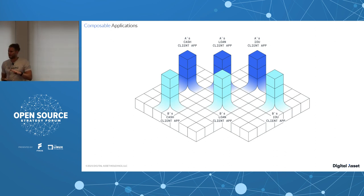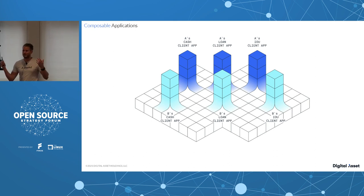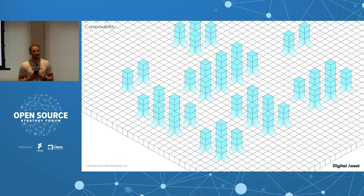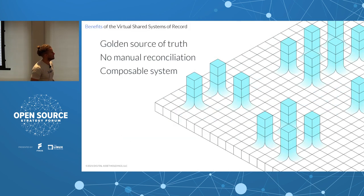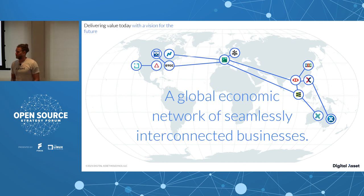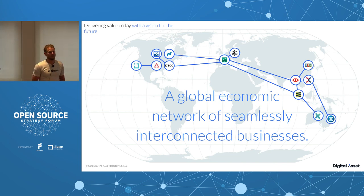Coming back to the three challenges preventing digital transformation due to data silos: first, DAML gives you a golden source of truth by integrating at the database layer where data lives. Second, no manual reconciliation — synchronization is done at the data layer, eliminating data warehouses and after-the-fact integration. Third, a composable system that can simply be added to in order to integrate existing applications and data. We're doing this today largely in the financial sector, with the goal of building a global economic network of seamlessly interconnected businesses.